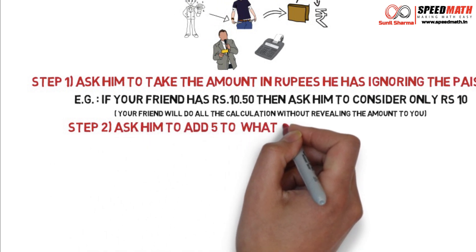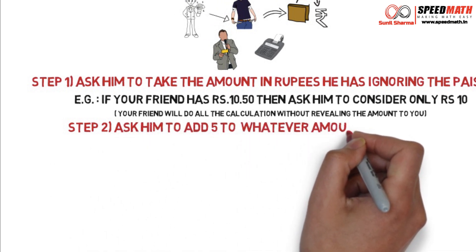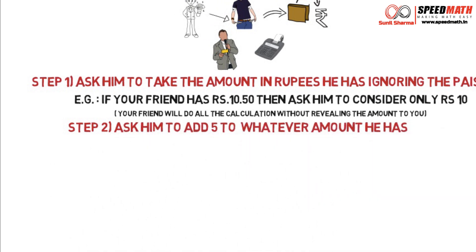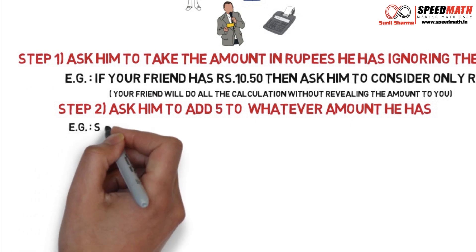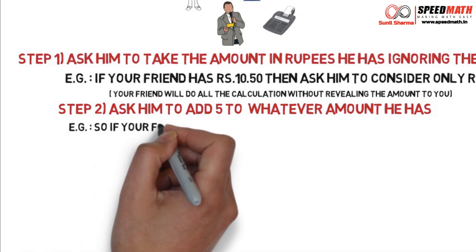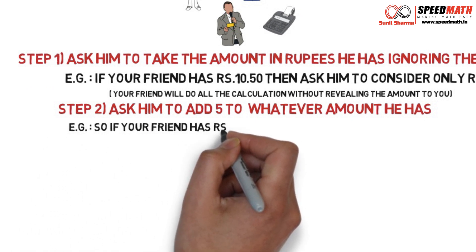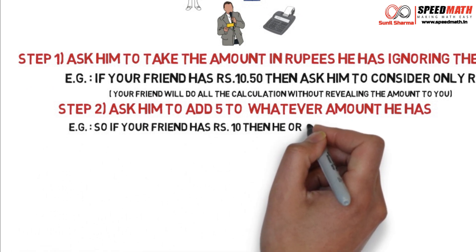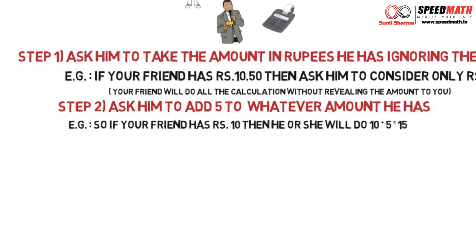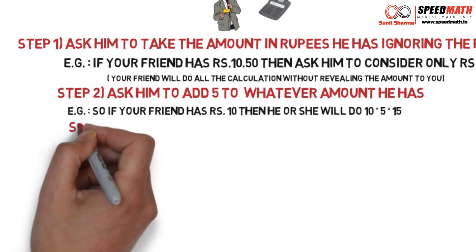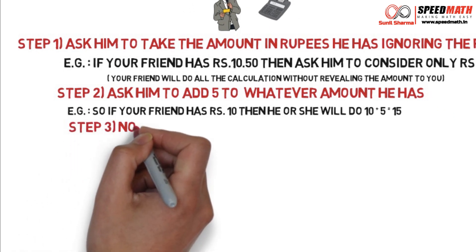Step 2: Ask him to add 5 to whatever amount he has entered in the calculator. For example, if he has taken rupees 10, then he will add 5 to it and the answer will be 15.